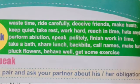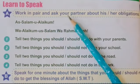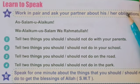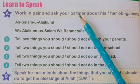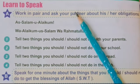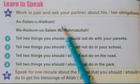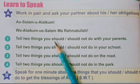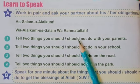Are you ready for spoken activities? Let's move forward to the activity 'Learn to Speak.' We will work in pairs and ask your partner about his or her obligations. Obligations mean duties — faraiz. Assalamu alaikum. Wa alaikum assalam wa rahmatullah. Tell two things you should and should not do with your parents. I should speak truth with my parents. I should help my parents. I should not disobey my parents. I should not deceive my parents.